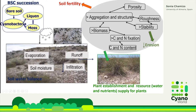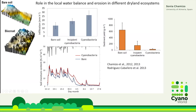Because of all these modifications in the soil, biocrusts also improve vegetation establishment and productivity by supplying water and nutrients to the vegetation patches. Our group has studied for many years — 15 to 20 years — the role of biocrusts in the local water balance and on erosion in different dryland ecosystems in southeast Spain.